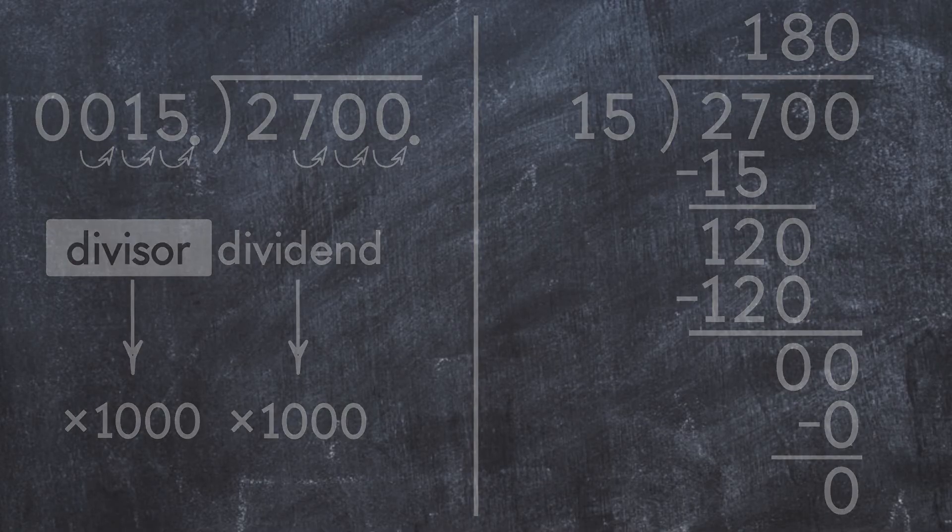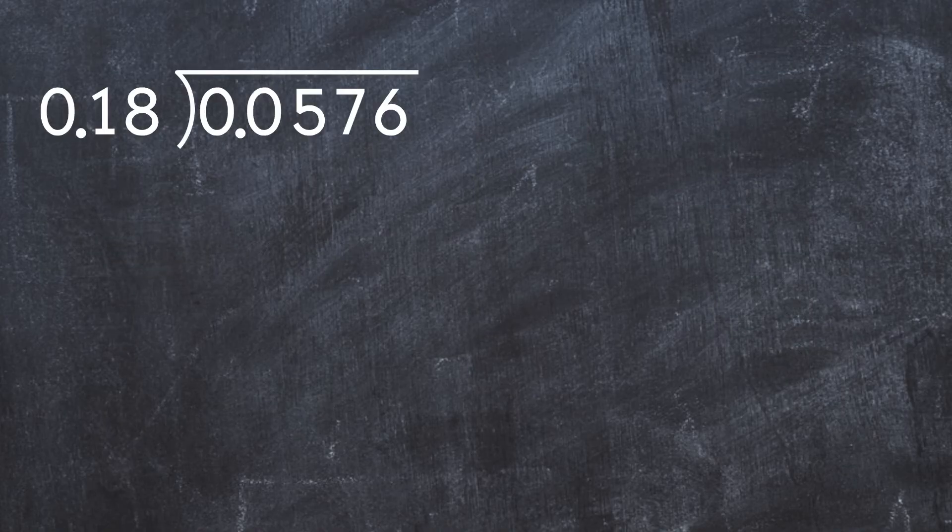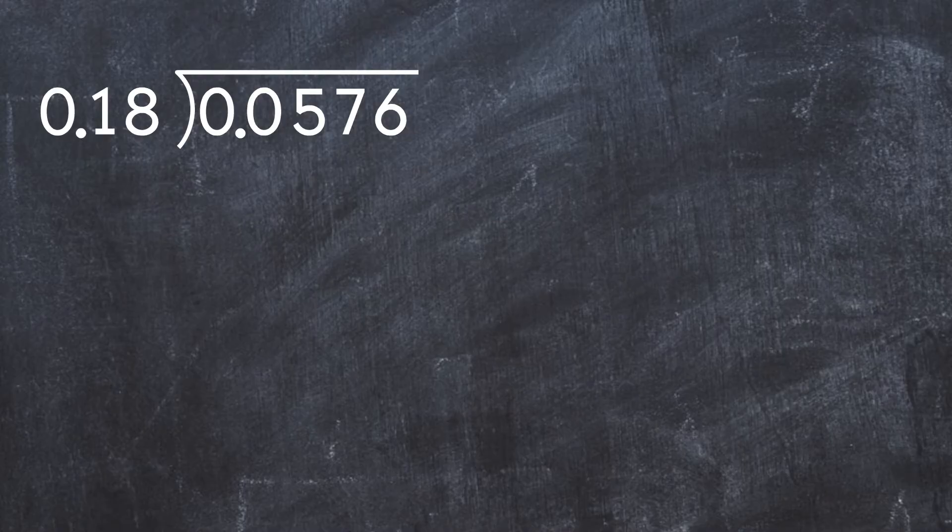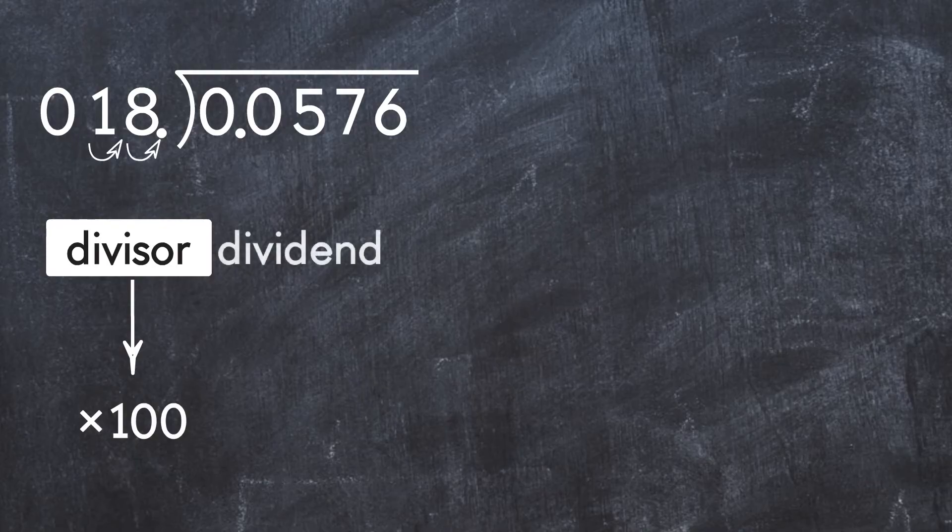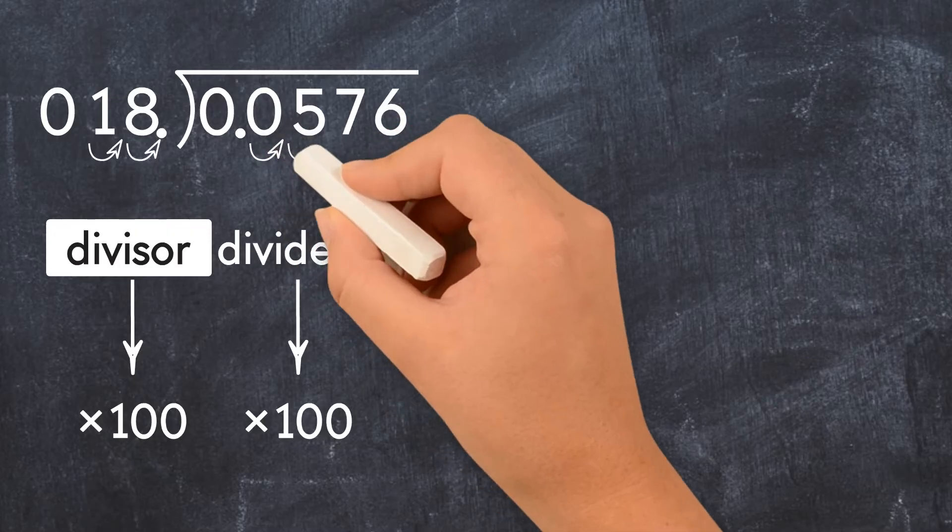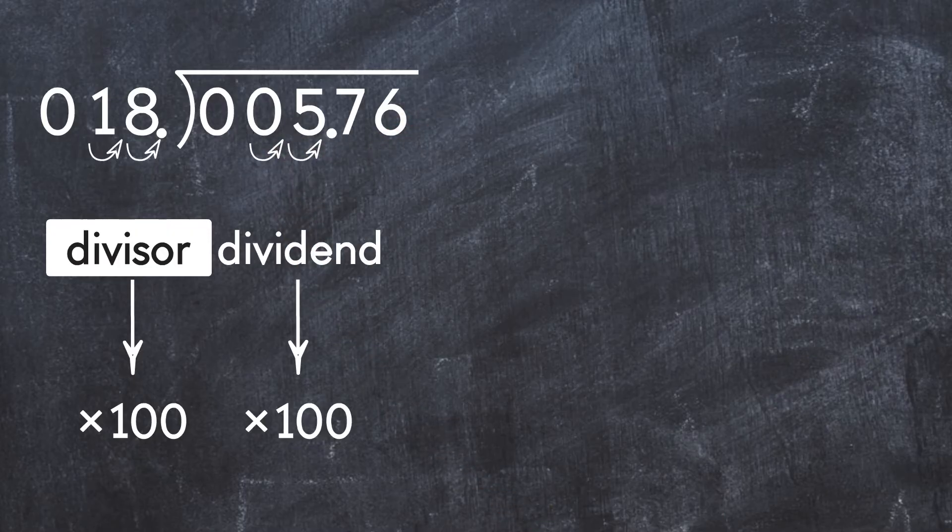Let's do another example. 0.0576 divided by 0.18. To turn the divisor into a whole number, we need to move the decimal point two places to the right. We do this by multiplying by 100. We also have to multiply the dividend by 100. We get 5.76 divided by 18.